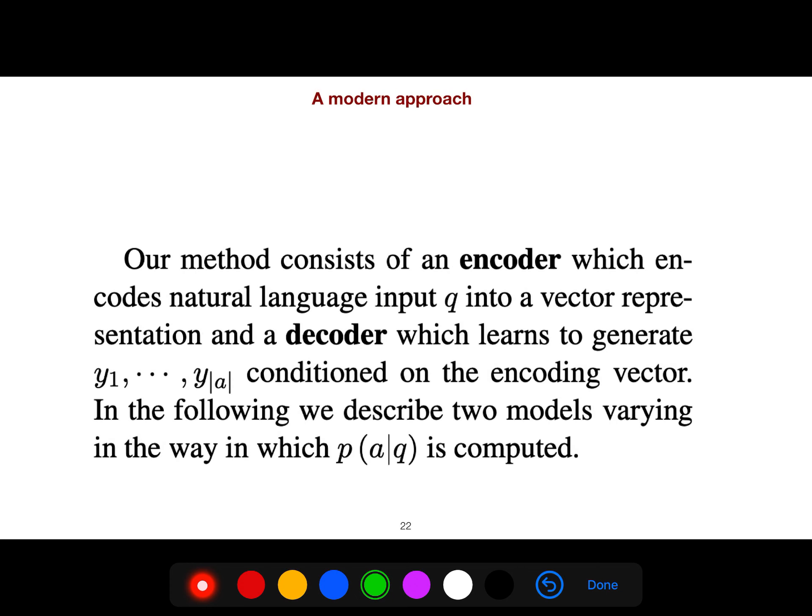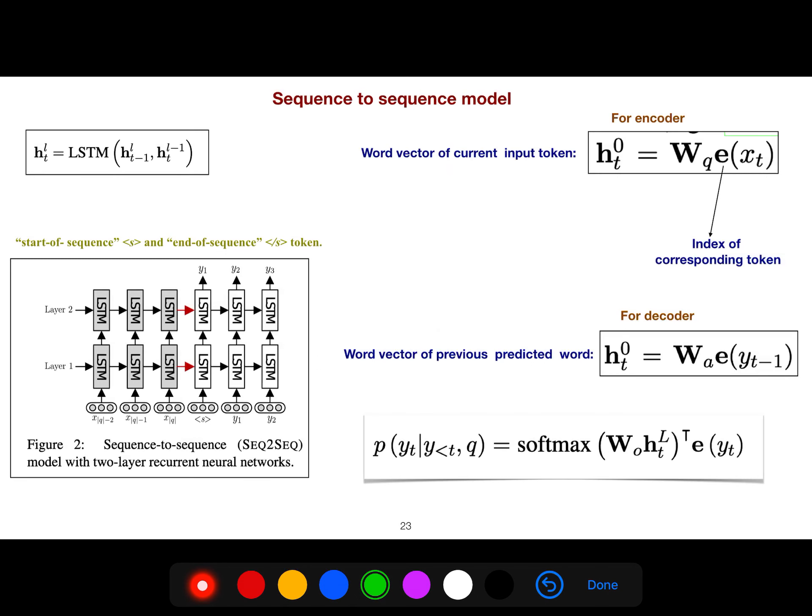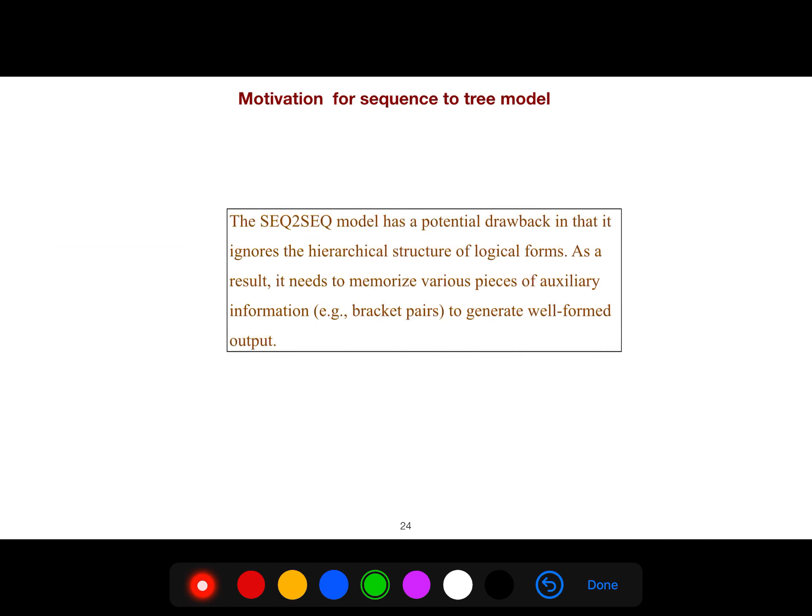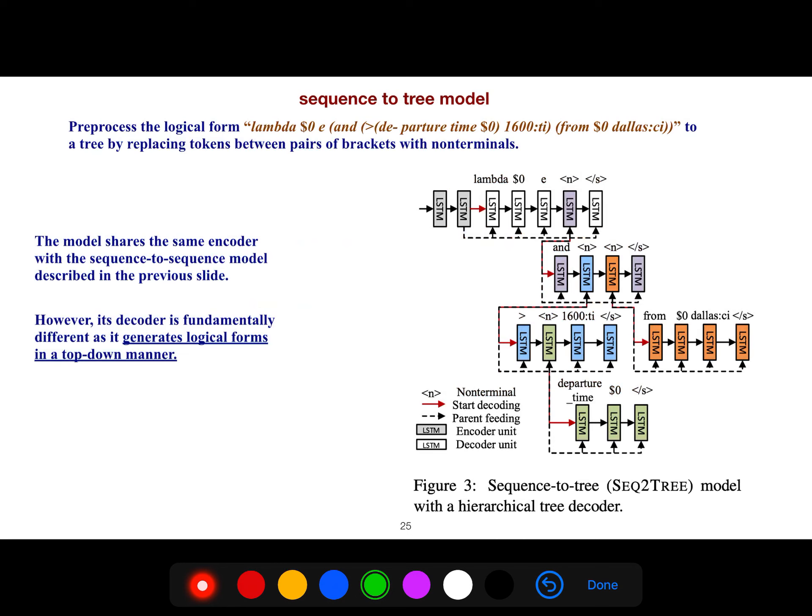Our method consists of encoder and decoder, like this sequence-to-sequence model. But sequence-to-sequence models have a potential drawback in that they ignore the hierarchical structure of the logical forms. As a result, they need to memorize various pieces of auxiliary information, such as bracket pairs, to generate well-formed output.